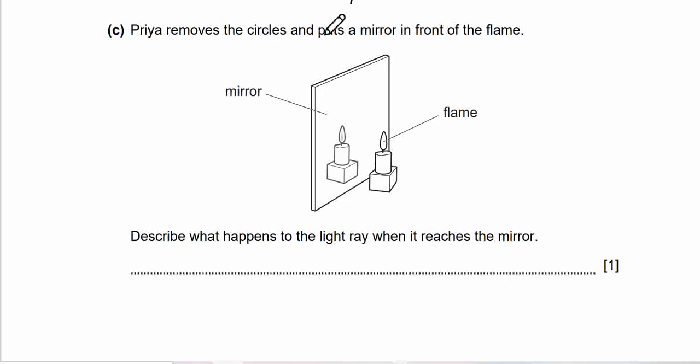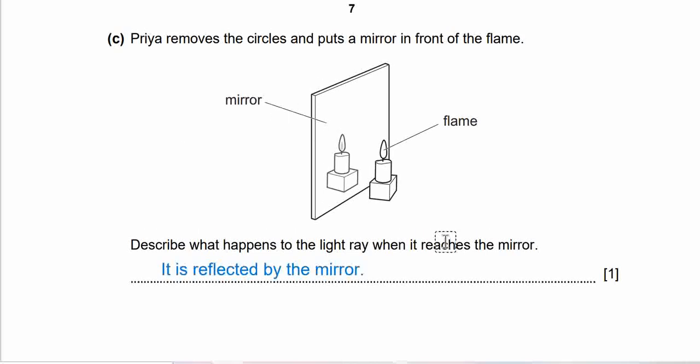Question C. Priya removes the circle and puts a mirror in front of the flame. Describe what happens to the light ray when it reaches the mirror. Are you ready with your answer? The ray of light will be reflected by the mirror. So light will hit the mirror and then it will be reflected by the mirror and form the image on the mirror. The extension of the reflected ray will form image in the mirror. So the light will be reflected by the mirror as the light cannot pass through the mirror as it is not transparent.